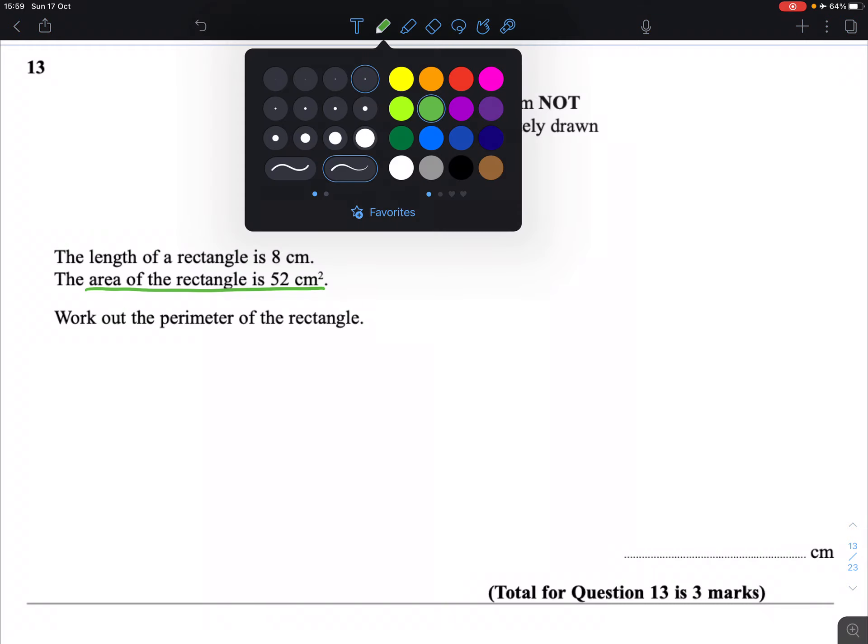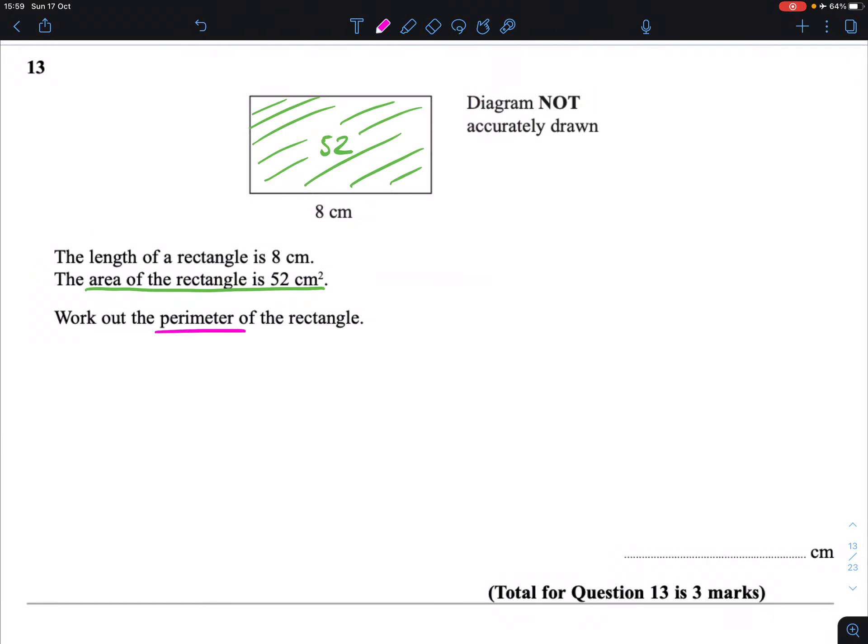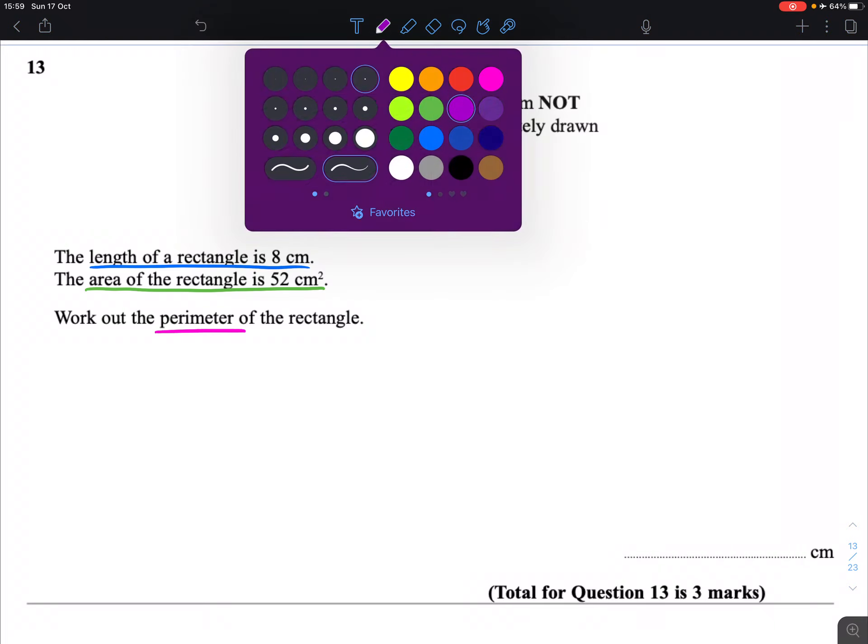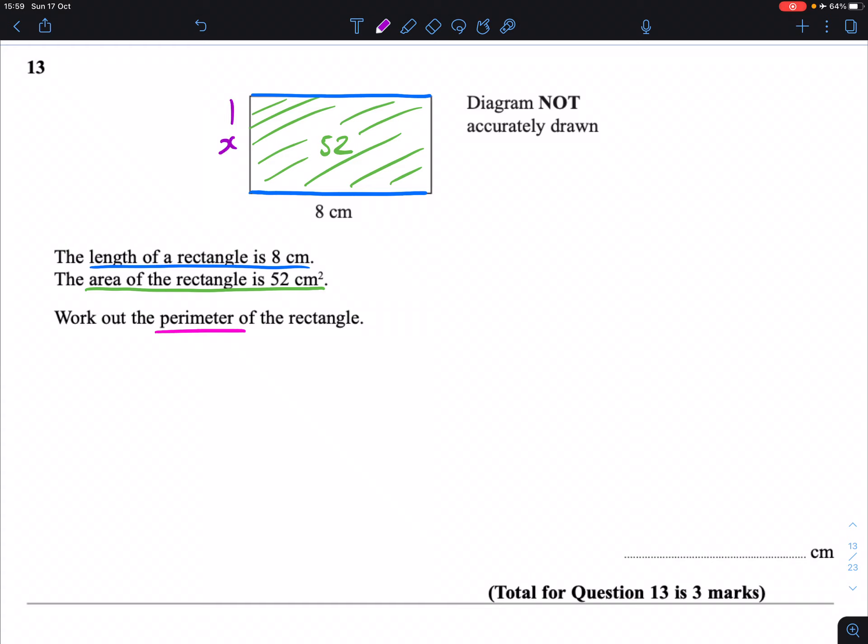The question's asking us to work out the perimeter of the rectangle. Now if you want to find the perimeter of the rectangle, we would need to take our 2 8s and add them together with whatever the length of these turn out to be.